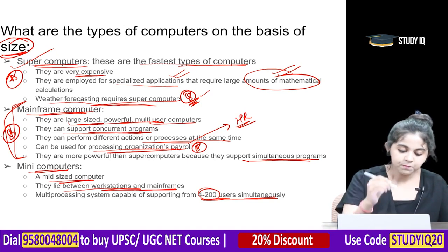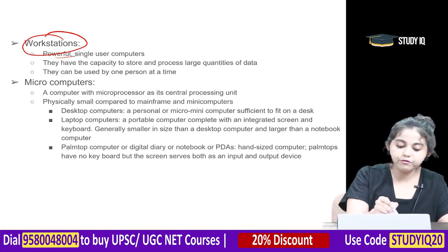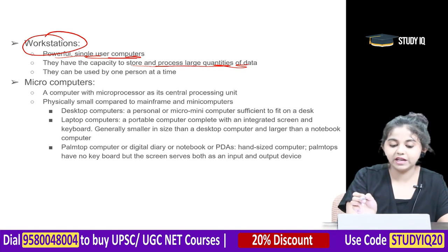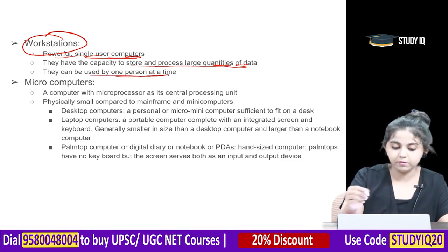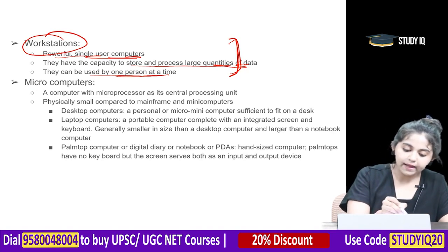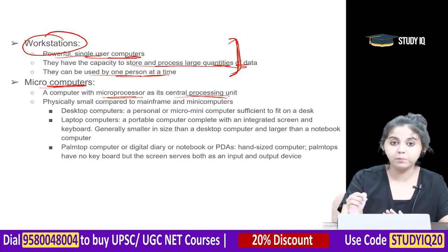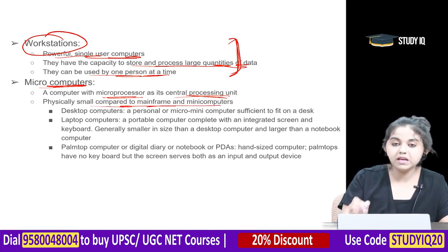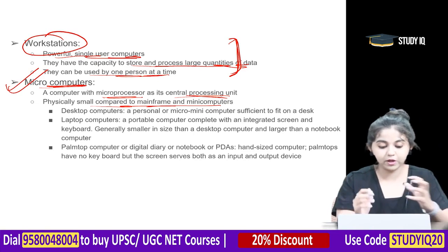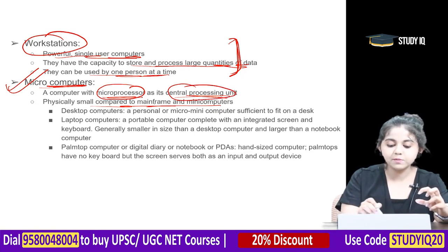Workstations are powerful single-user computers with the capacity to store and process large quantities of data, used by one person at a time. Micro computers have a microprocessor as a digital central processing unit and are physically small compared to mainframe and mini computers.